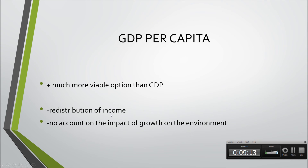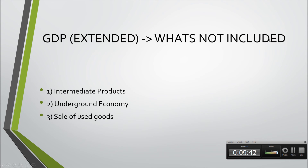However, GDP per capita doesn't account for the redistribution of income — for example, if 1% of the population is very wealthy and 99% are poor, the average can look artificially solid. It also doesn't account for the environmental impact of growth. What's not included in GDP: intermediate products used to make other products already counted; the underground economy where no record exists of transactions, such as babysitters, maids, and private tutors; and the sale of used or second-hand goods.